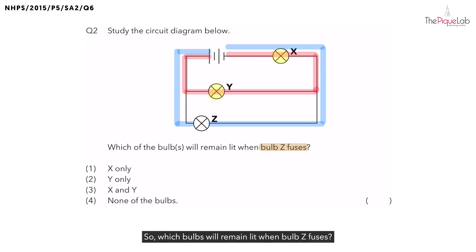So which bulbs will remain lit when bulb Z fuses? Bulb X and Y will still light up. So the correct answer should be option 3.